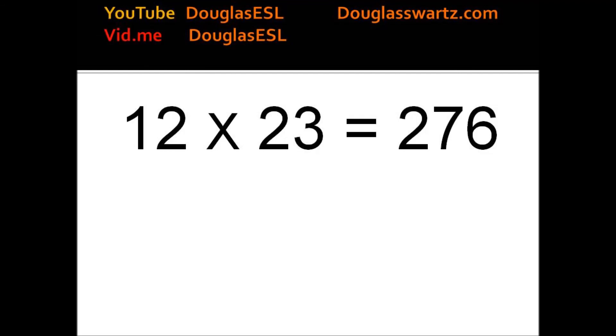12 times 23 equals 276. 12 times 24 equals 288. 12 times 25 equals 300.